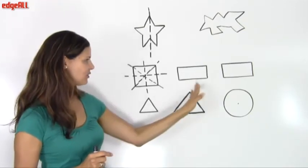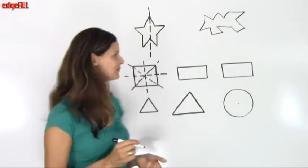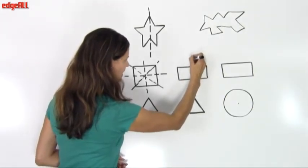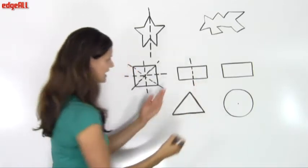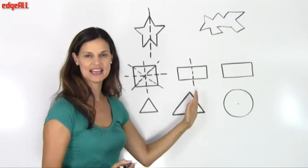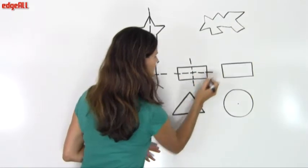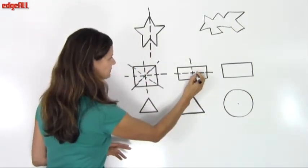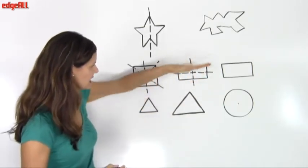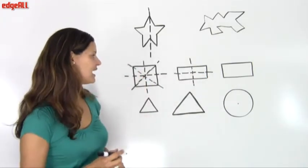Let's take a look at a rectangle and see how many lines of symmetry we can find. The rectangle has a vertical line of symmetry right through the middle, and I can see the reflection is the same on each side. The rectangle also has a horizontal line of symmetry, and the shape above the horizontal line is a reflection of the shape below it.